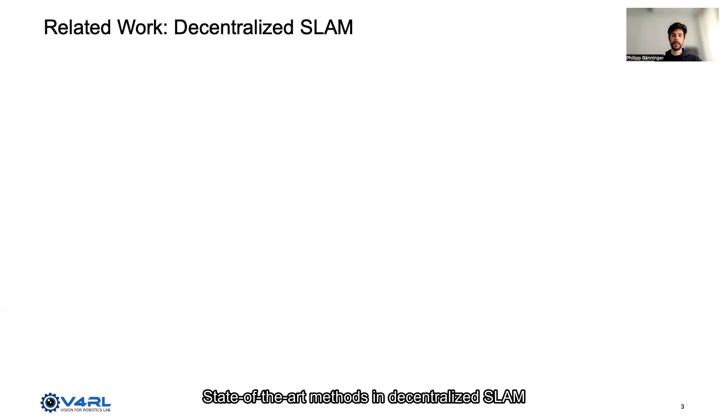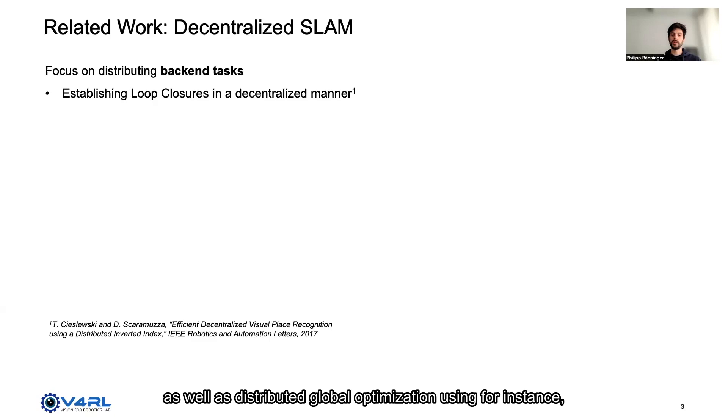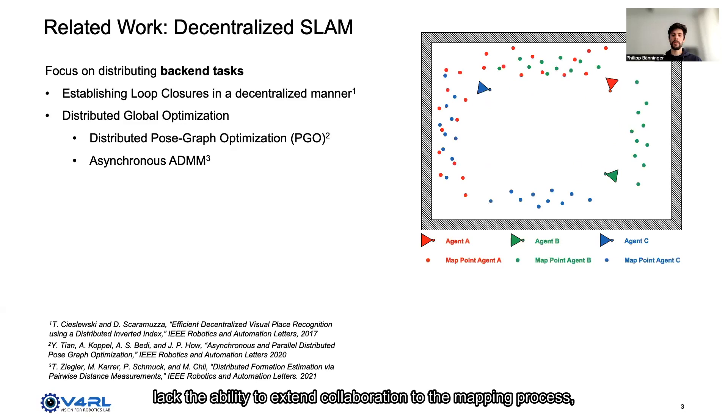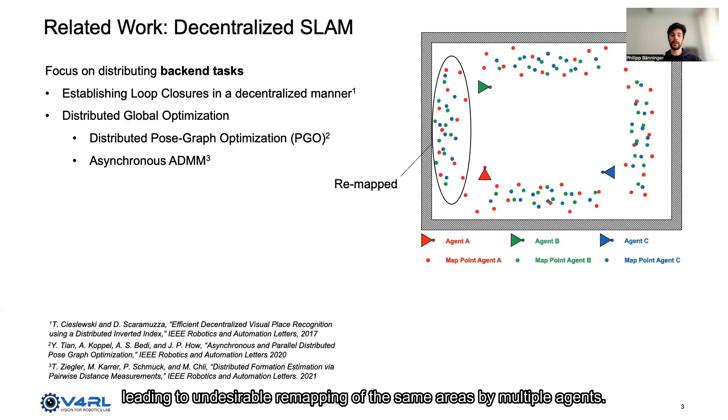State-of-the-art methods in decentralized SLAM have therefore focused on distributing backend tasks only, specifically the challenge of establishing loop closures in a decentralized manner as well as distributed global optimization using for instance distributed pose graph optimization or asynchronous ADMM. However, state-of-the-art systems using PGO lack the ability to extend collaboration to the mapping process leading to undesirable remapping of the same areas by multiple agents.